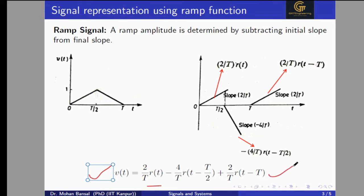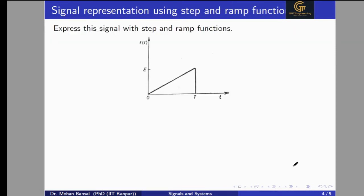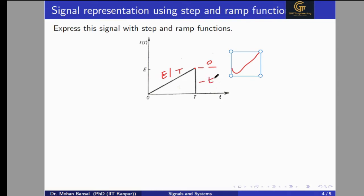In this way we can represent any signal in terms of the ramp function. Now we have to represent a signal in terms of both the step signal and the ramp signal. For the ramp representation: the slope is E/T starting at t=0, and this slope ends at t=T where the slope becomes 0. Also, at t=T, one step is taken by the signal with amplitude minus E.